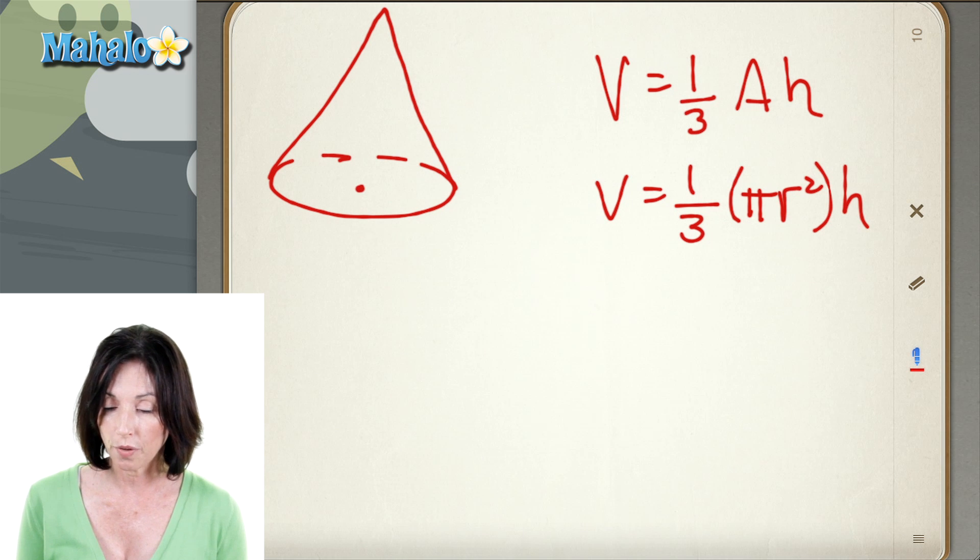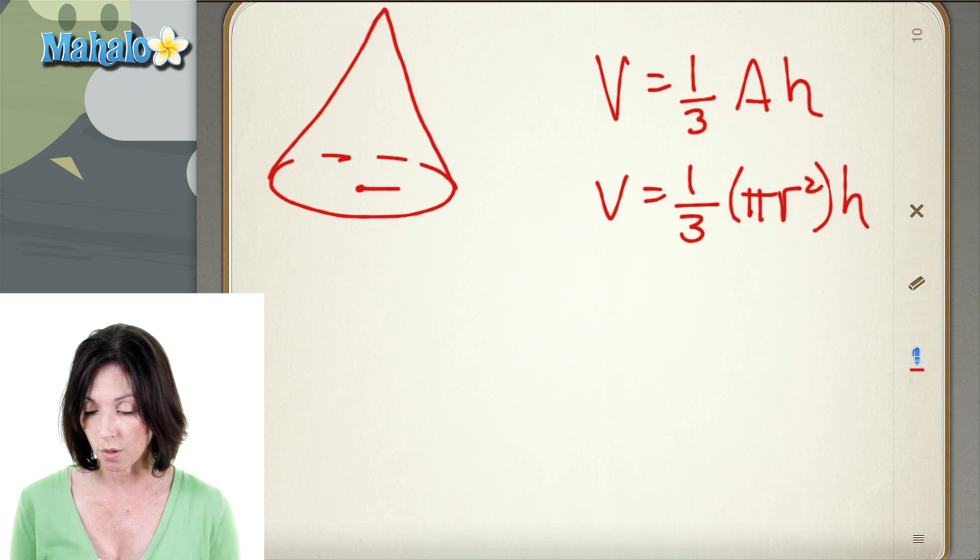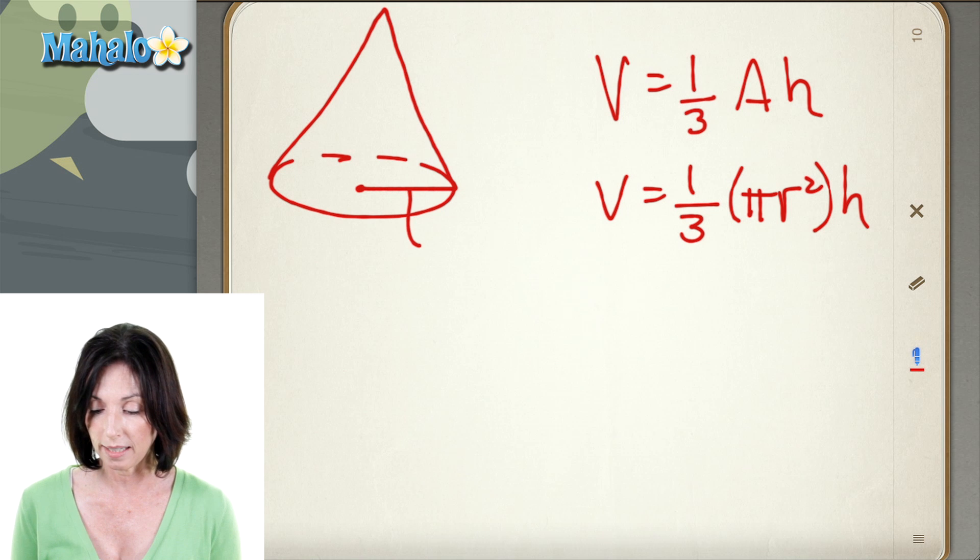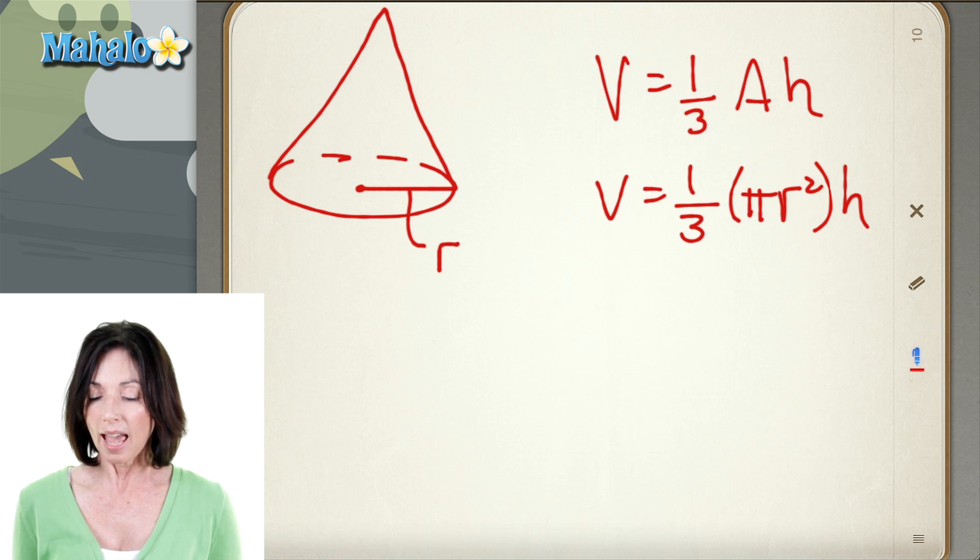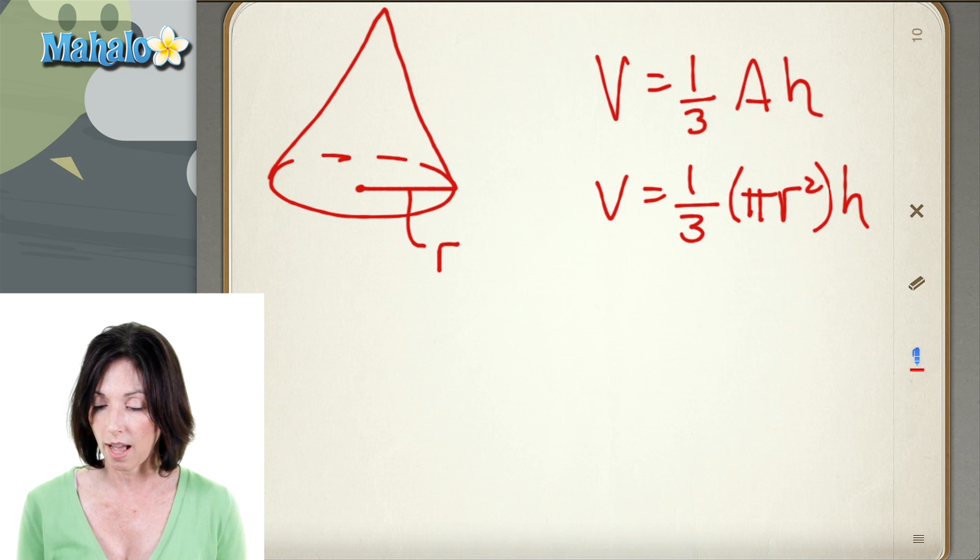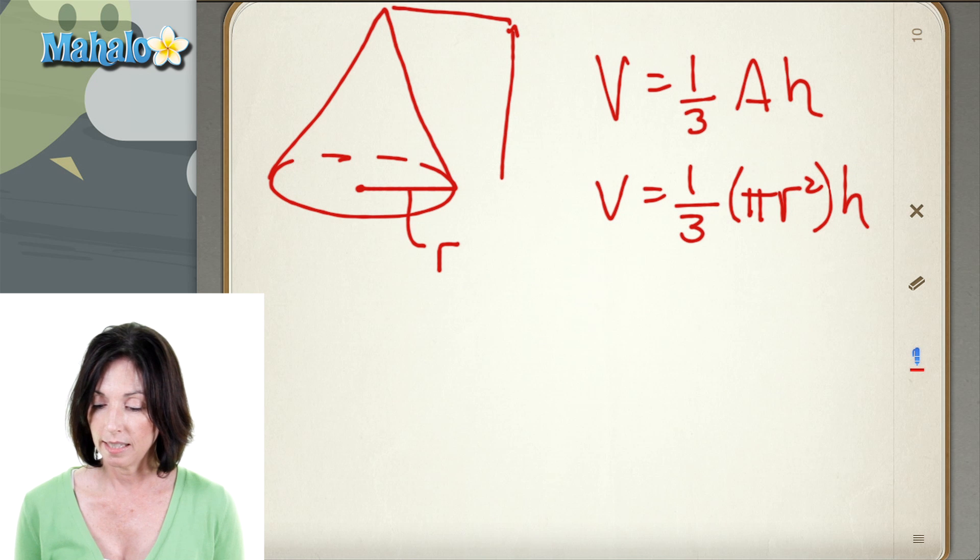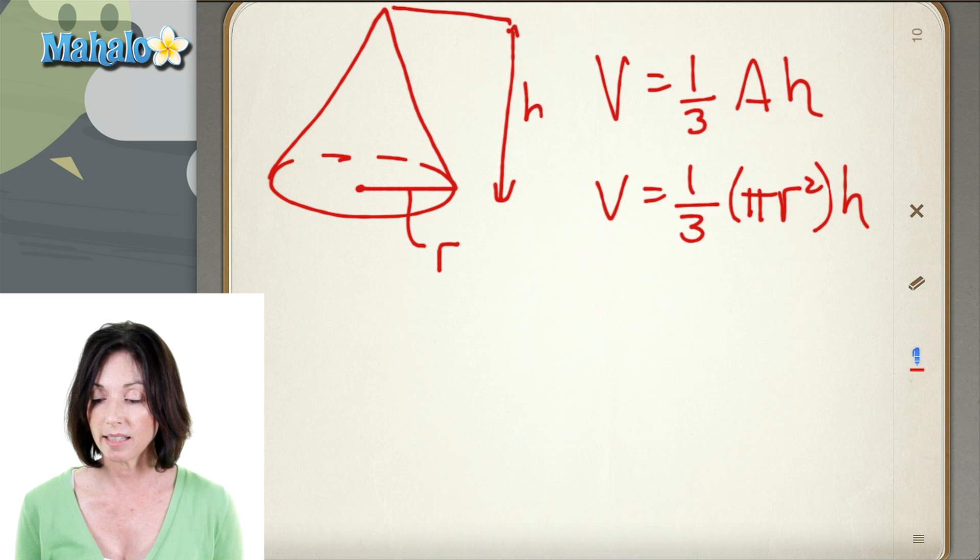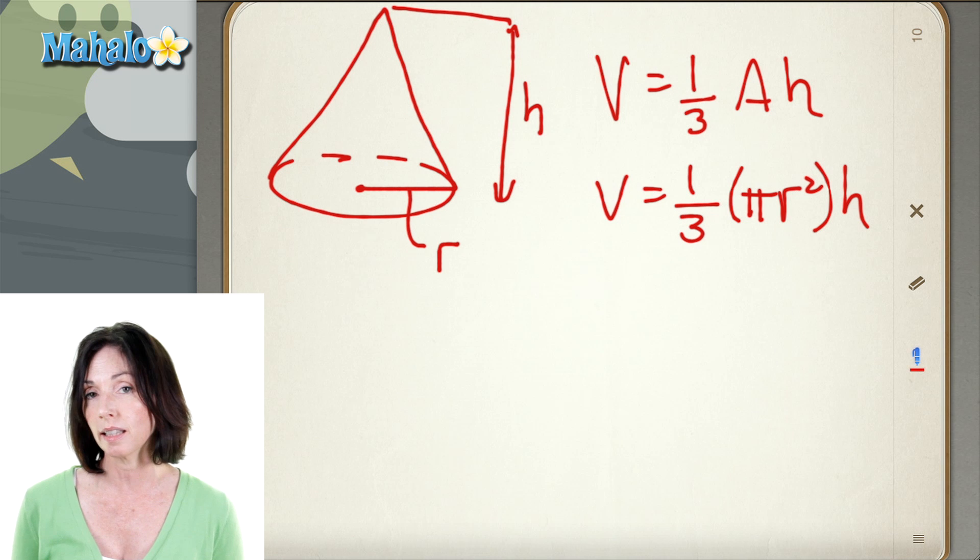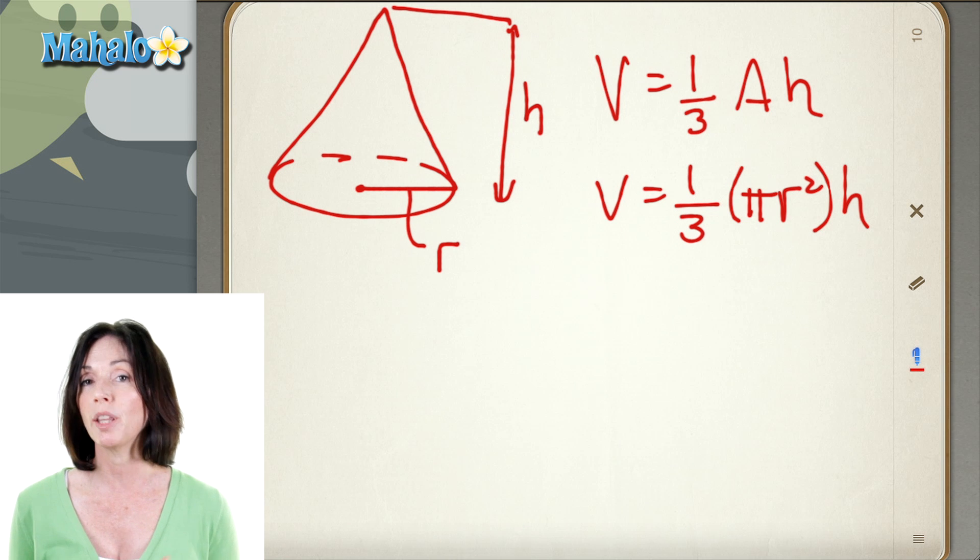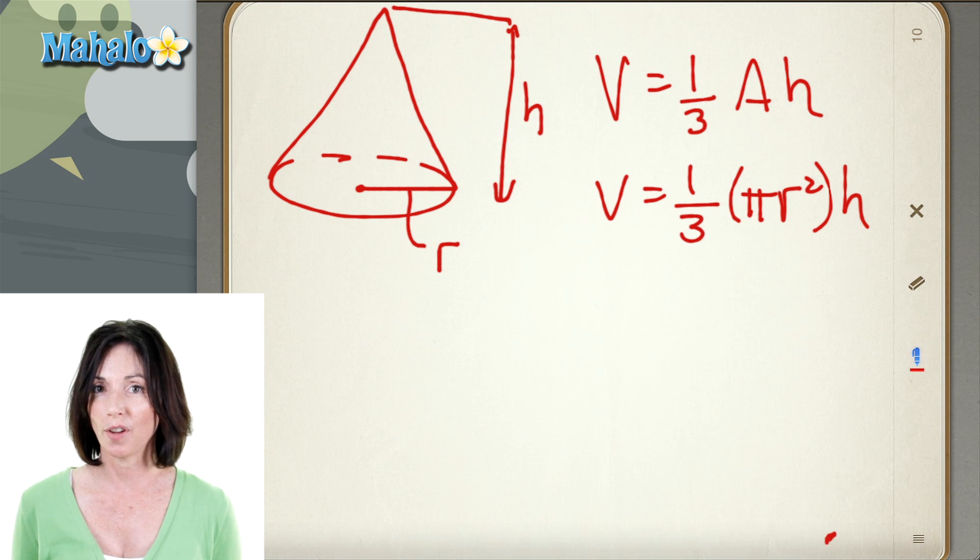So remember that when you're finding the area of the base of the cone, you want to make sure that you know the radius. That would be that distance halfway across the circle. And the height is the vertical height, the distance from the tip of the cone down to its base. That's the height that you're looking for, not the distance of the slanted line that makes up the cone. It has to be the vertical height in order to find the volume correctly.